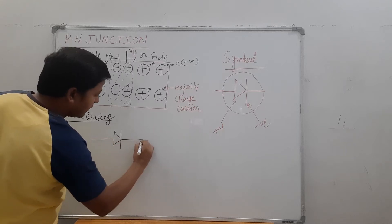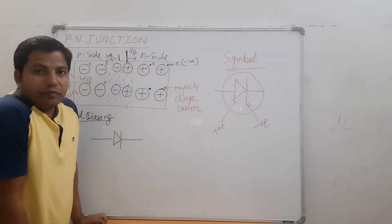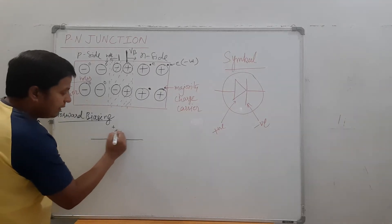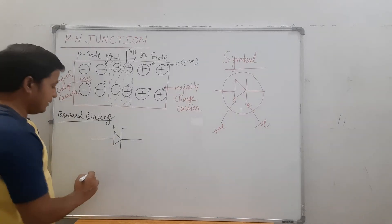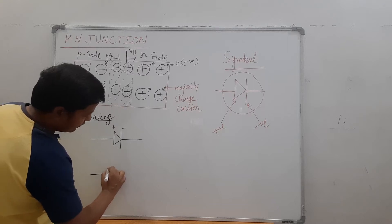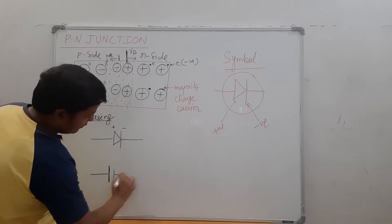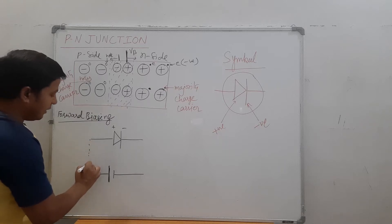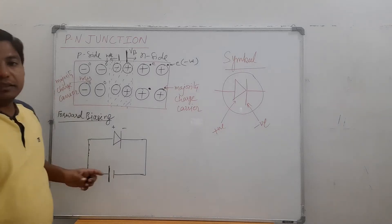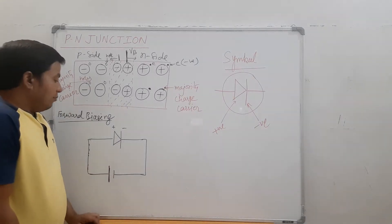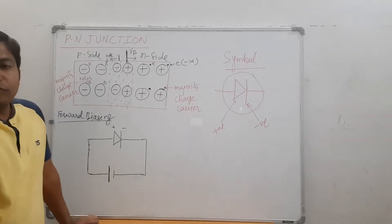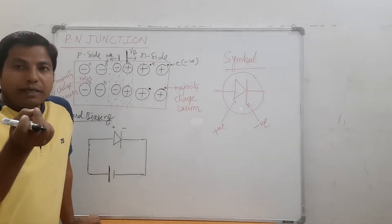This is the PN junction symbol. To study forward biasing, if we join the positive side of the diode with the positive side of the battery — a variable voltage battery — we form a simple circuit. We connect an ammeter and a voltmeter. The ammeter is always connected in series, and the voltmeter is connected in parallel to the diode.